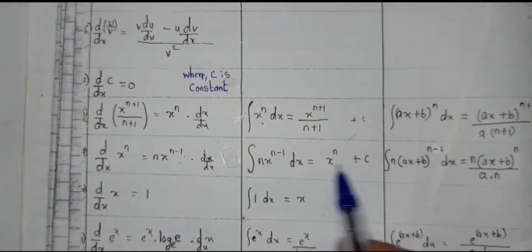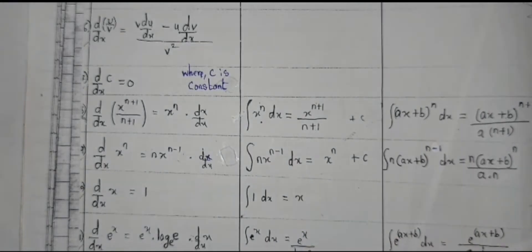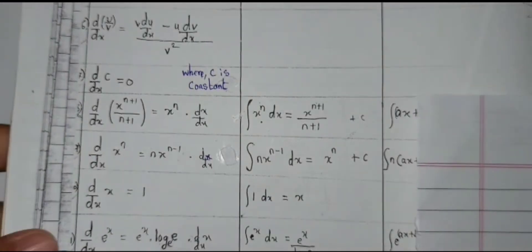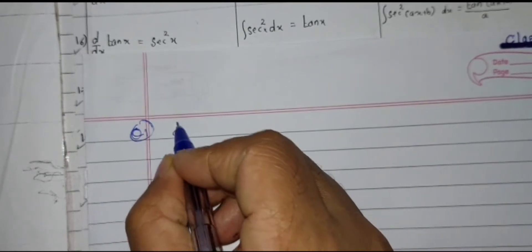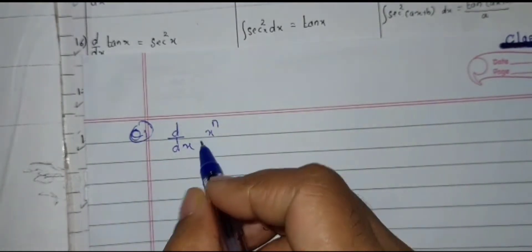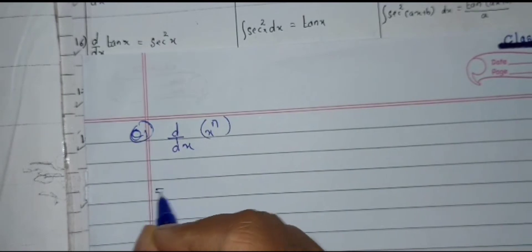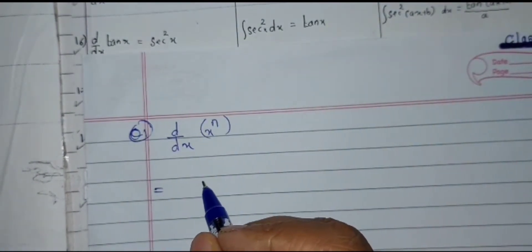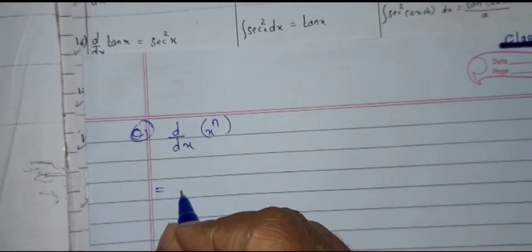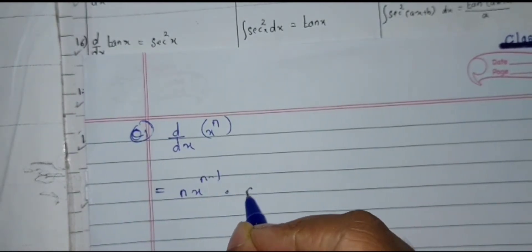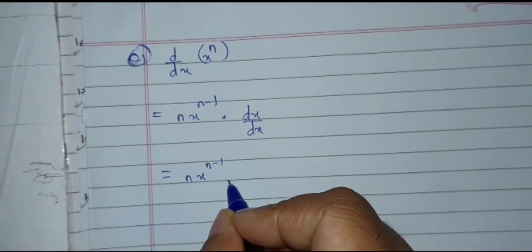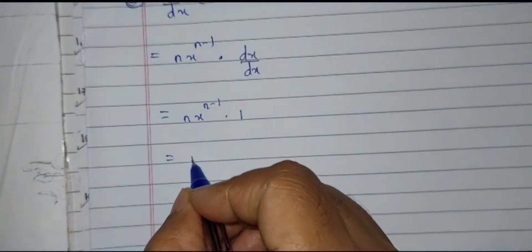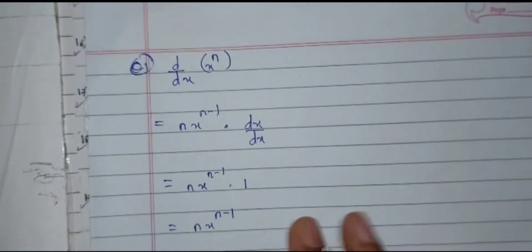Let us solve an example. The question is: derivative of x raised to n. The next step gives n times x raised to n minus 1 times dx upon dx. Simplifying: n times x raised to n minus 1 times 1, which equals n times x raised to n minus 1. This is the answer for the derivative part.